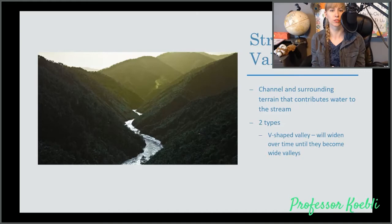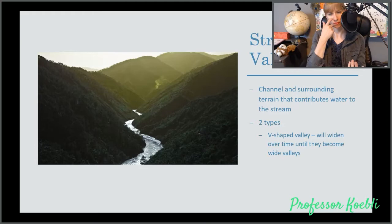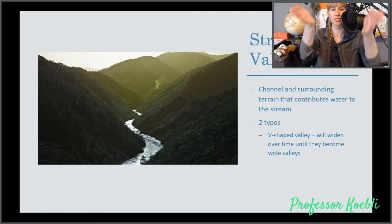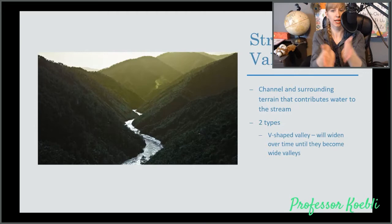Stream valleys are a channel and surrounding terrain that contributes water to the stream. You have the V-shaped valley and then you have the widening valley. The V-shaped valley will widen over time until it becomes a wide valley and it's well known for its iconic V.